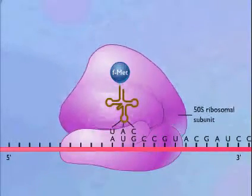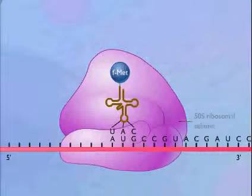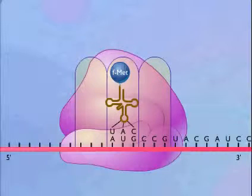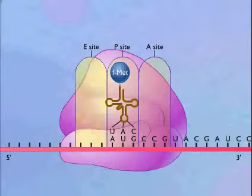Proteins called initiation factors are also involved but are not shown. The 70S ribosome has two sites to which transfer RNA-carrying amino acids can bind. One is called the peptidyl, or P-site, and the other is called the acceptor, or A-site. There is also a third site called the exit, or E-site, where transfer RNAs are released.